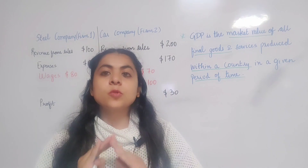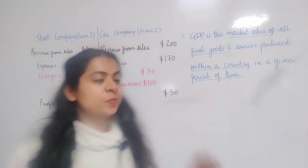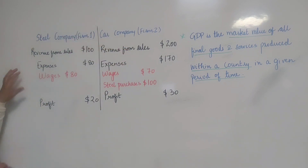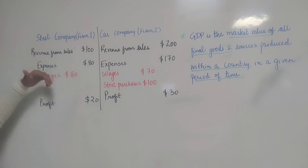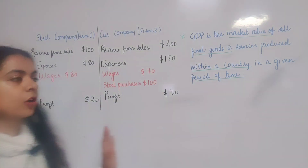Consider an economy composed of just two firms: firm one and firm two. Firm one is a steel firm and firm two is a car firm. Firm one produces steel and sells it for $100 to firm two, so the total revenue earned by firm one is $100.